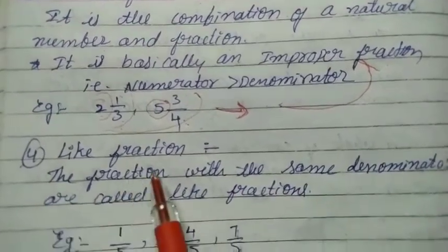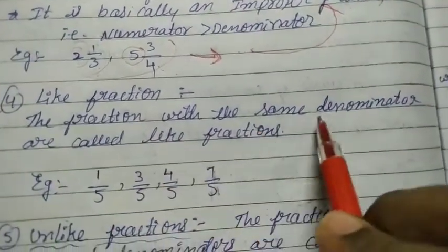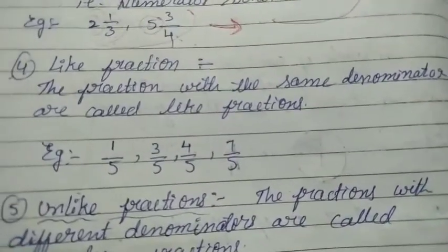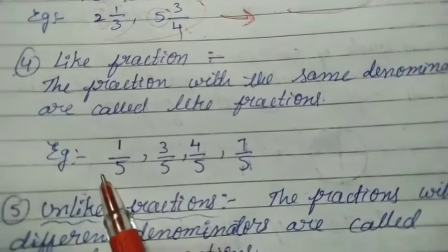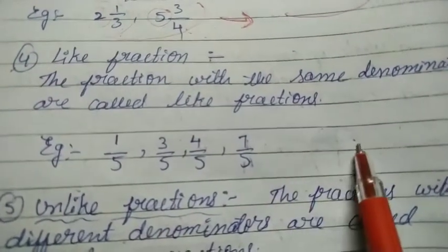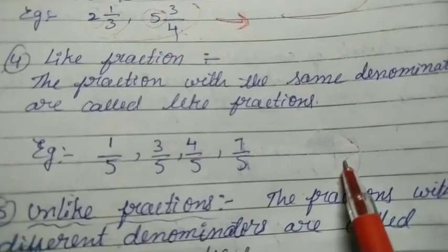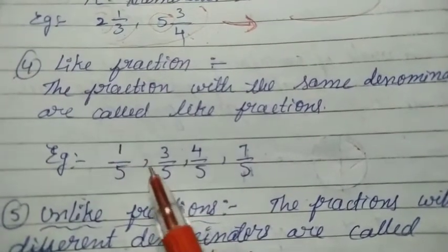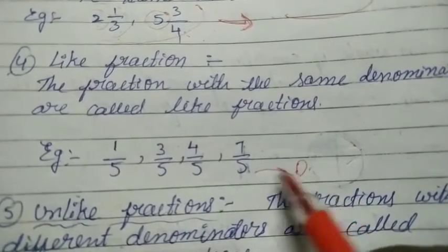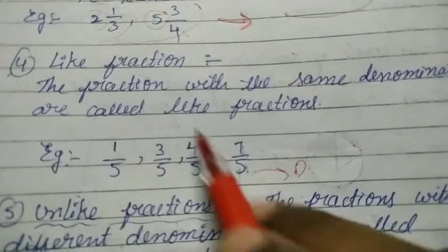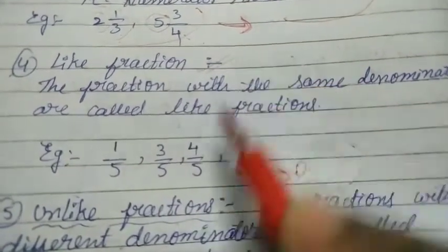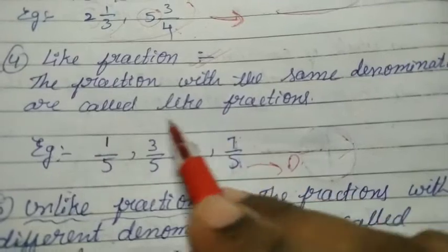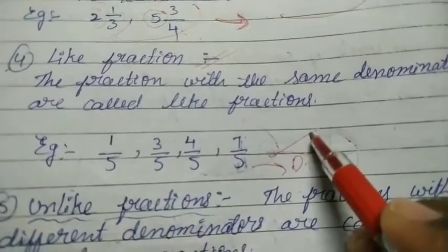The fourth type is like fractions. Fractions with the same denominators are called like fractions. For example, one by five, three by five, four by five, and seven by five — all have the same denominator 5. So these fractions are known as like fractions.